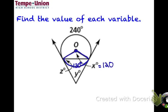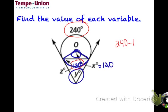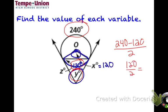For y: using today's theorem — outside arc minus inside arc divided by two — we do (240 − 120) / 2 = 120 / 2 = 60. So y = 60 degrees.